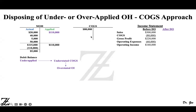Here I'm showing you the cost of goods sold T-account. The corporation's cost of goods sold amounted to $80,000 for the current year. Here is an income statement example with sales of $300,000. This side shows before disposing of the overhead, and this side will show after we dispose of the underapplied or overapplied overhead to cost of goods sold.